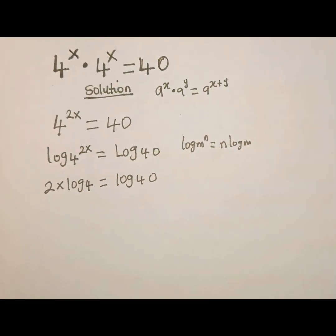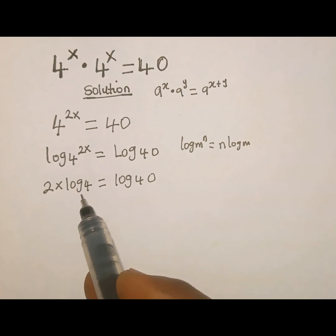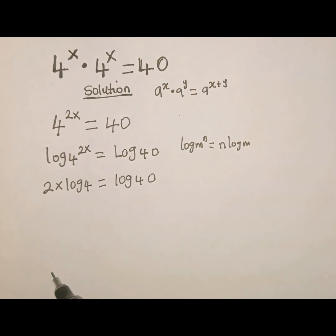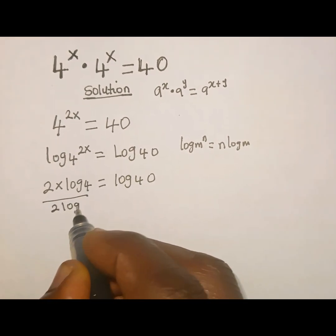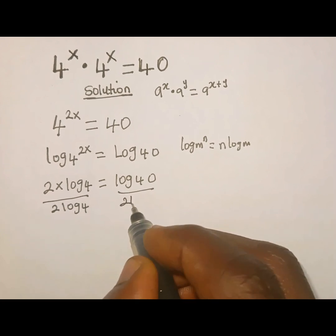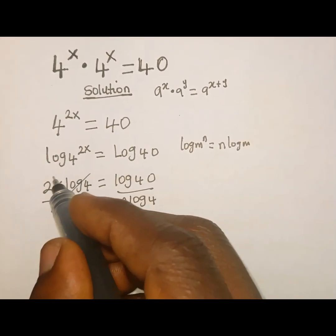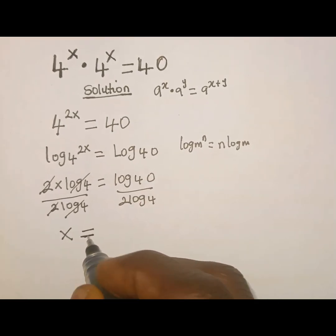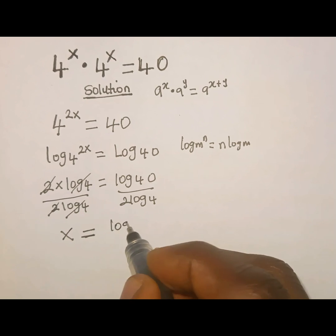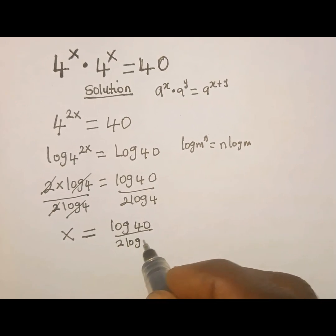Remember we are looking for the value of x. On the left hand side, we have 2 and log 4 attached to x as the coefficient of x. So we are going to divide both sides by the coefficient of x. We divide both sides by 2 log 4, so that log 4 cancels log 4 and 2 cancels 2. We are left with just x on the left hand side, equal to log of 40 divided by 2 log 4.